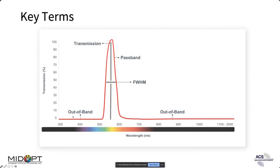Along the Y-axis of the transmission curve is transmission; along the X-axis are wavelengths broken down into nanometers. The spectrum starts at about 300 nanometers, which is UV, then goes into visible light — what our human eyes see — and to the right it moves into the infrared, specifically near-IR and shortwave-IR. Machine vision filters and the cameras we support are really focused on this part of the spectrum.